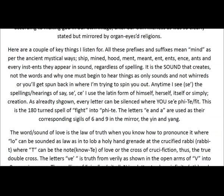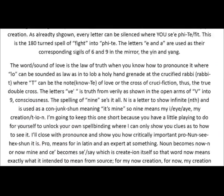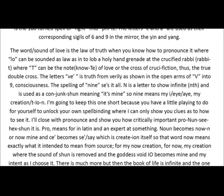The letters E and A are used as their corresponding sigils of six and nine in the mirror — the yin and the yang. The word, or sound of love, is the law of truth. When you know how to pronounce it, where L-O can be sounded as law — as in, to lob a holy hand grenade at the crucified rabbi, well, that's rabbi with a silent T — where T can be the note of love or the cross of crucifixion, thus the true double cross. The letters V-E is truth from verily, as shown in the open arms of V into nine consciousness. The spelling of nine says it all: N is a letter to show infinite or nth, and is used as a conjunction meaning 'it's mine' — so nine means 'my I, my creation.' T-I-O-N.